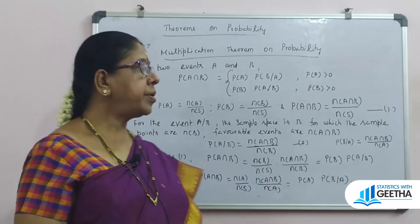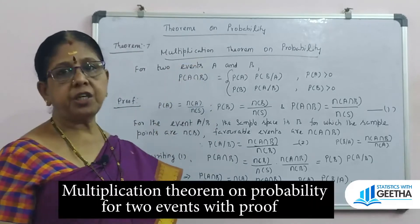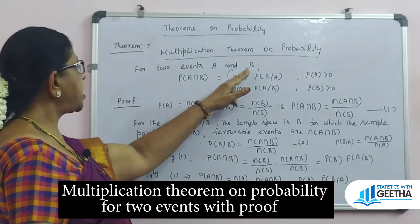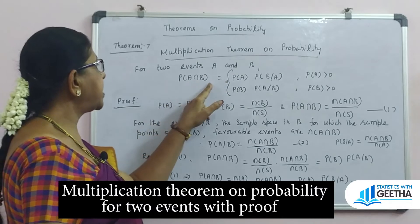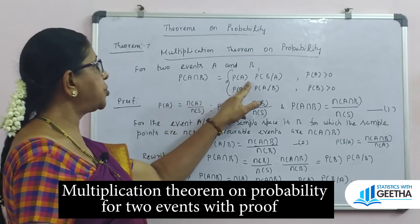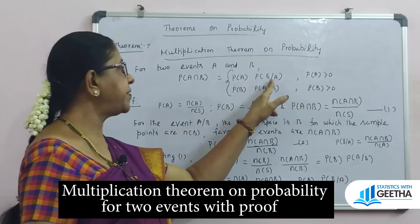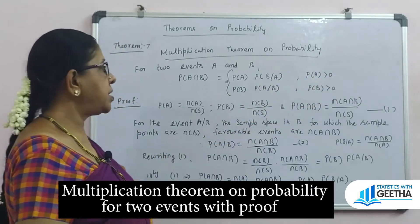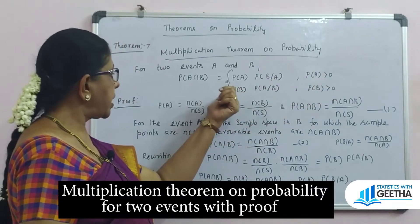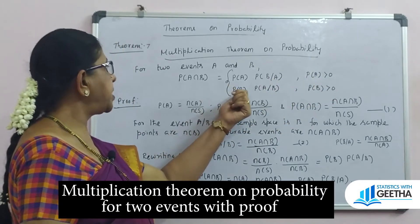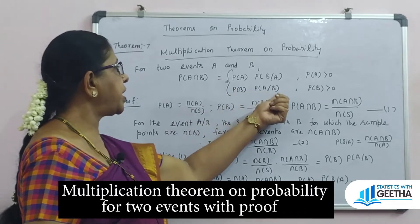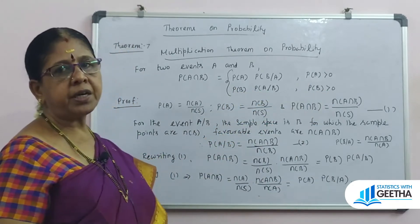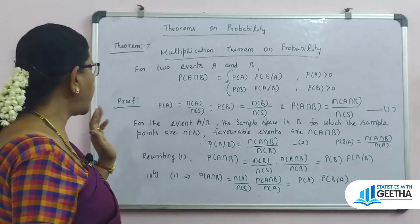Now the multiplication theorem of probability. For any two events A and B, P(A intersection B) equals P(A) times P(B|A), provided P(A) is greater than 0, which can also be written as P(B) times P(A|B), provided P(B) is greater than 0.